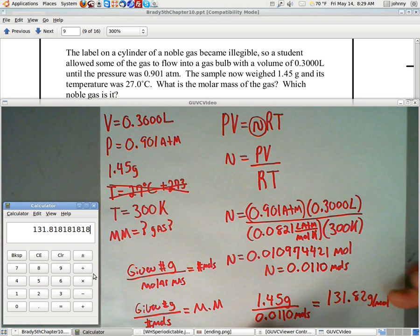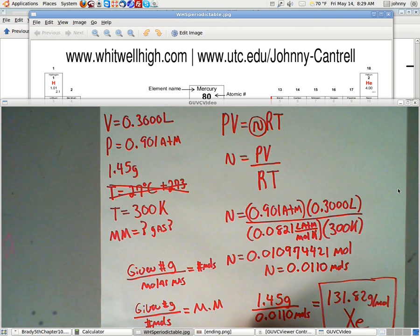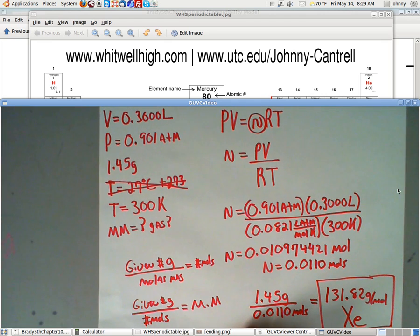Now, if you look at the periodic table, the only thing that's close to that, that is a noble gas, is XE, which is xenon. So, this is actually xenon. Because you see that, the 131.29. I know it's not exactly 131.82, but we know it's a noble gas by far and for sure.